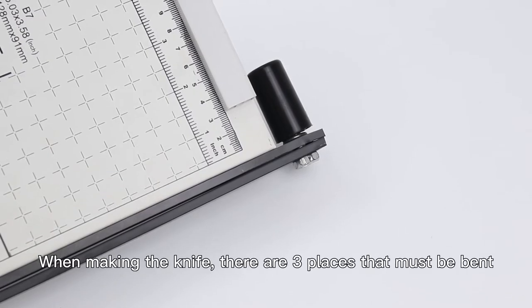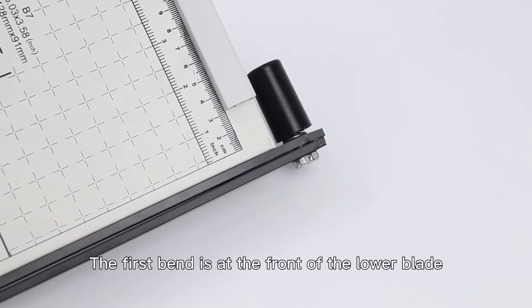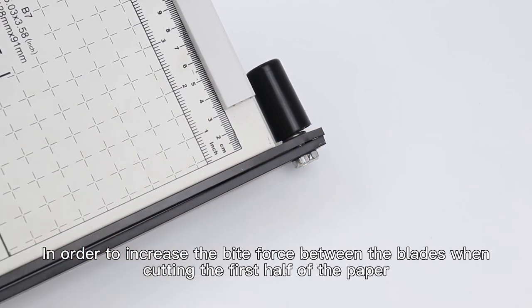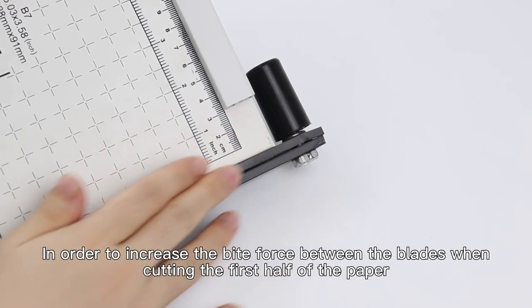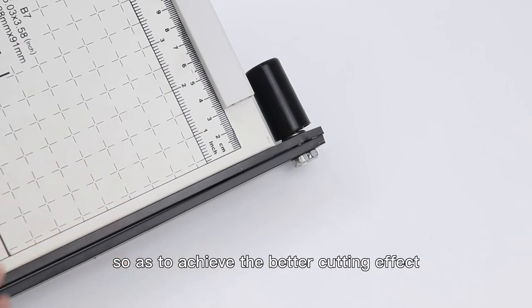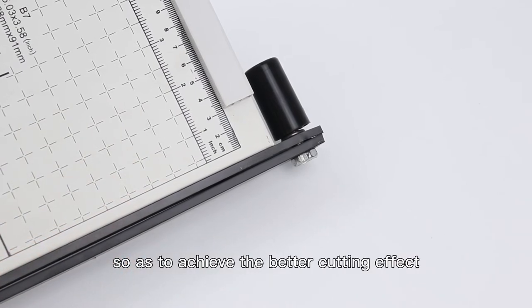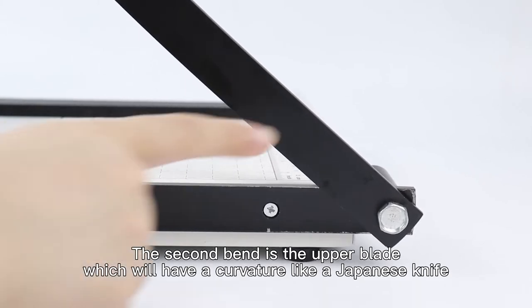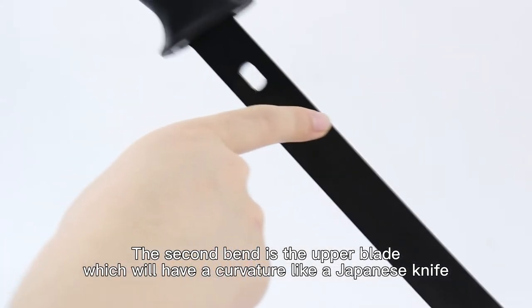When making the knife, there are three places that must be bent. The first bend is at the front of the lower blade, in order to increase the bite force between the blades when cutting the first half of the paper, so as to achieve better cutting effect. The second bend is the upper blade, which will have a curvature like a Japanese knife.